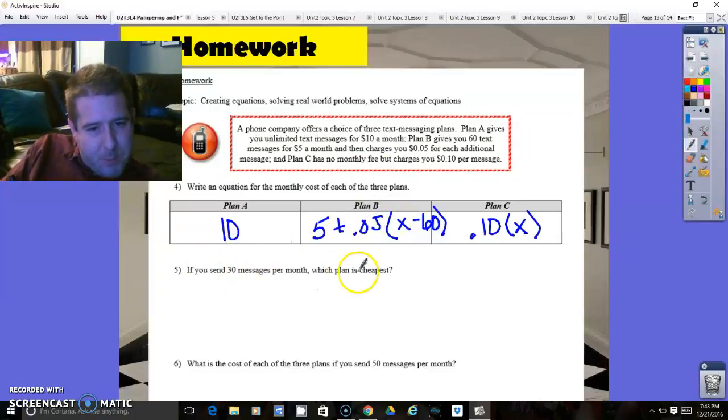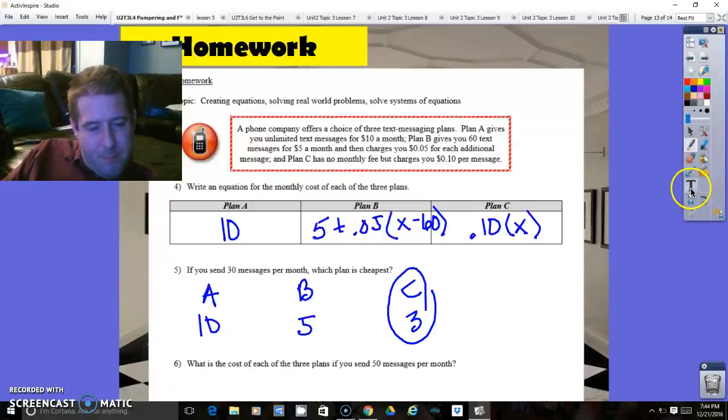So if you send 30 texts per month, which plan is the cheapest? Plan A would be $10. Plan B, if you send 30 messages, they're not going to refund you money. So that means you're going to have to pay $5. And plan C, if you send 30 texts times 10 cents each, every 10 texts is $1. So it looks like that's going to be just $3. So it looks like plan C is the cheapest for number five.